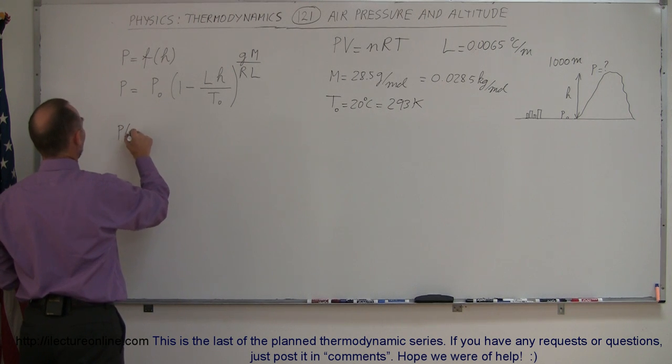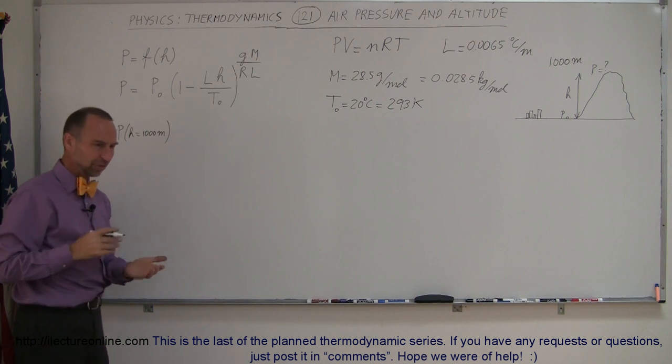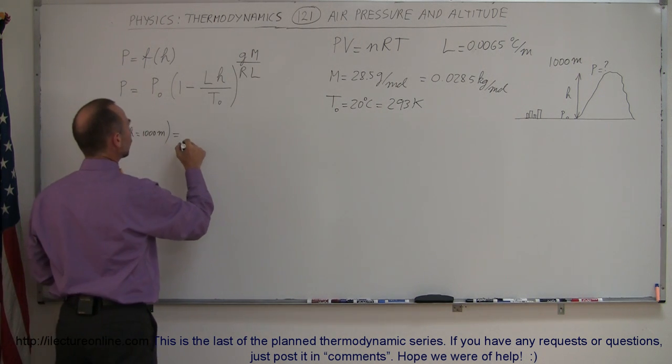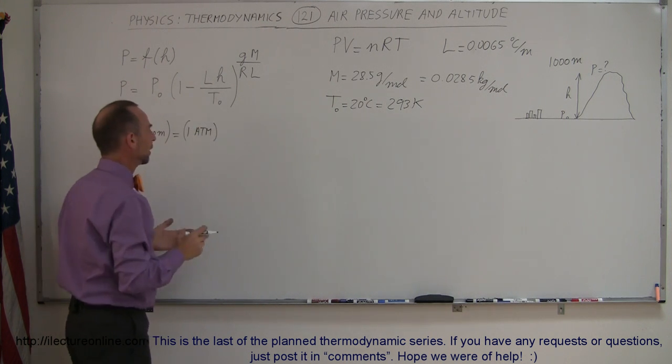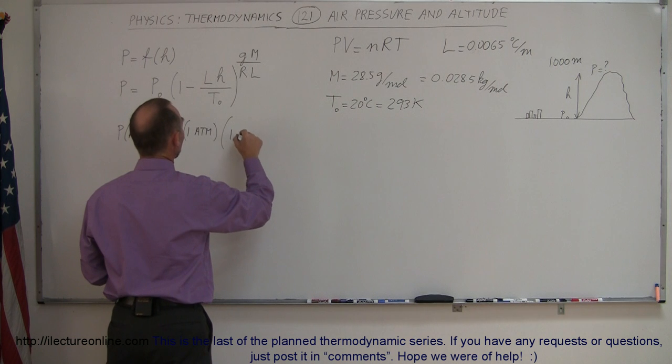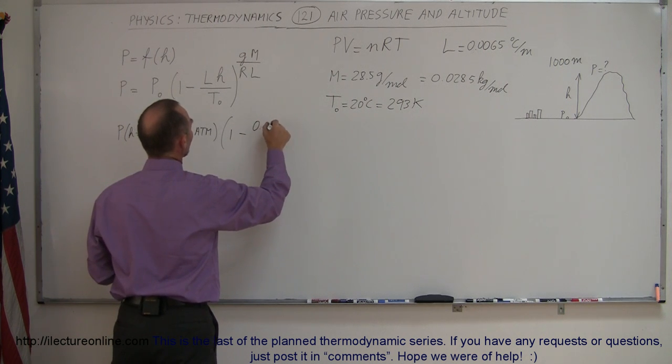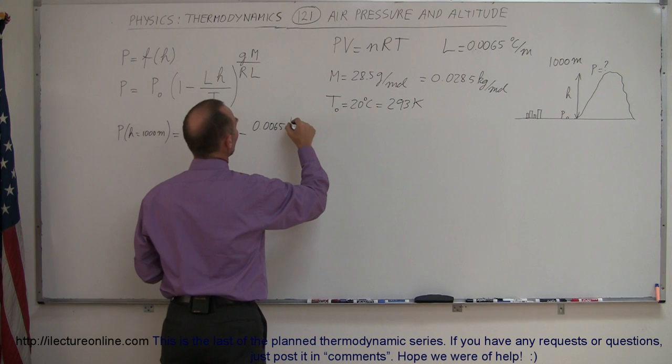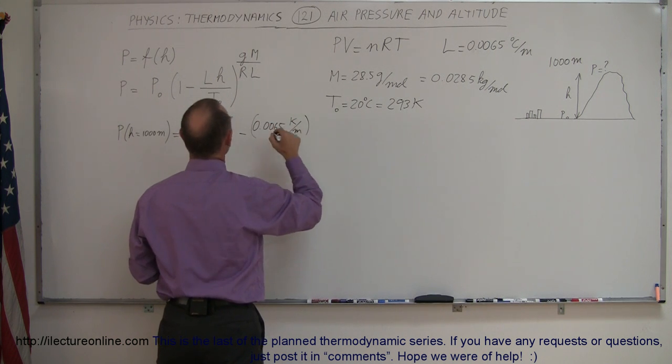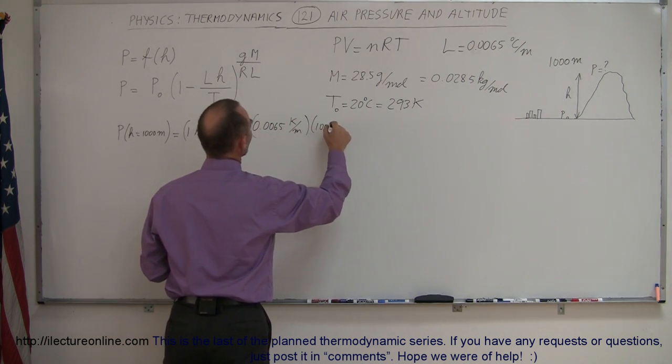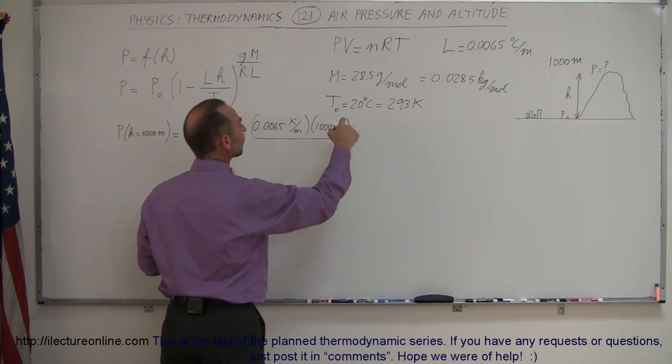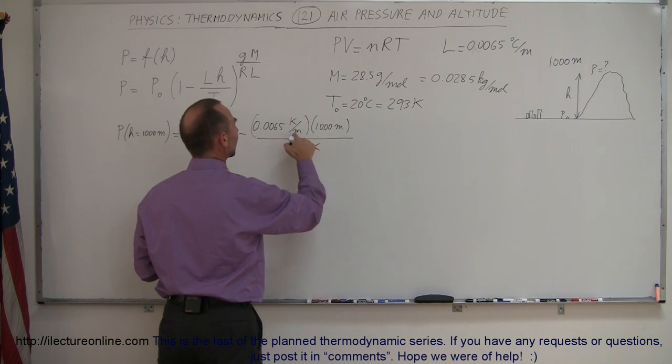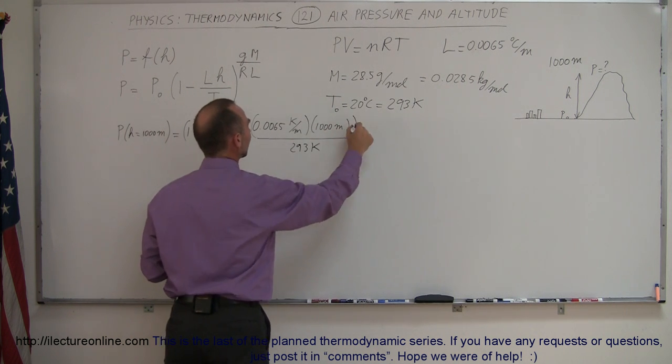So the pressure at height equals to a thousand meters, which is about 3,300 feet, is equal to the air pressure at sea level. So let's just call it one atmosphere, so we're going to compare it to what is at sea level, times one minus the lapse rate, 0.0065, that would be, we can call it Kelvin per meter, times the height, which is a thousand meters, divided by the temperature, which would be at sea level, which is 293 Kelvin. Notice that the meters cancel out and the Kelvin cancel out.